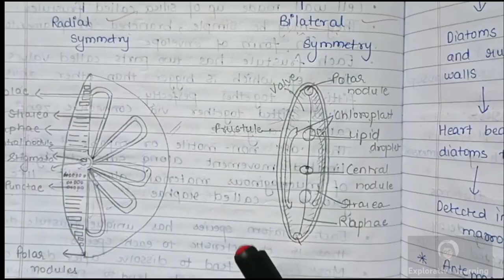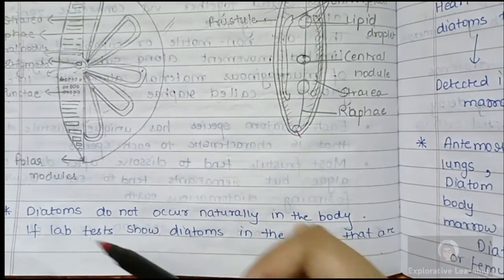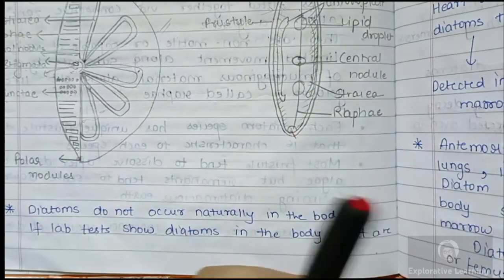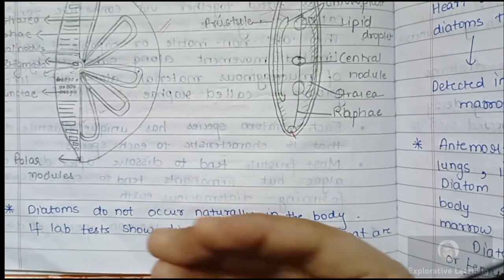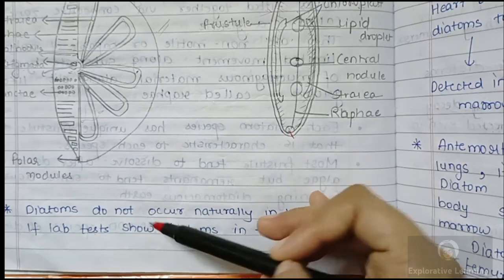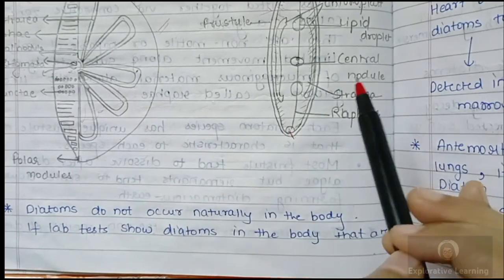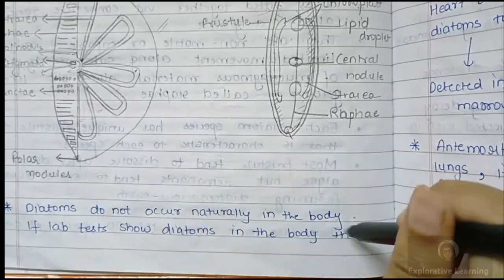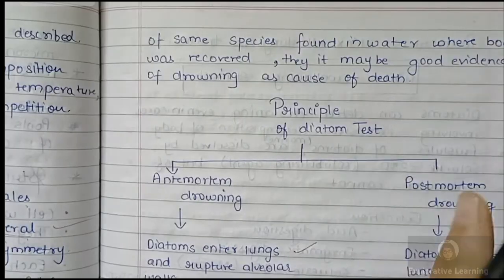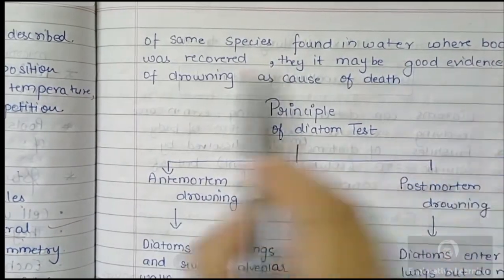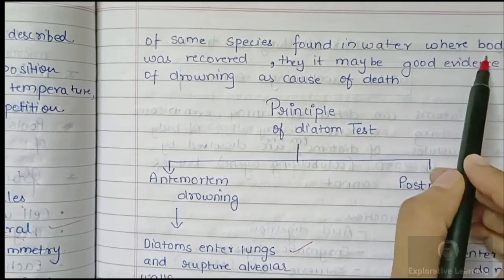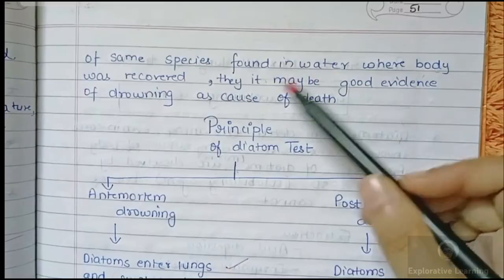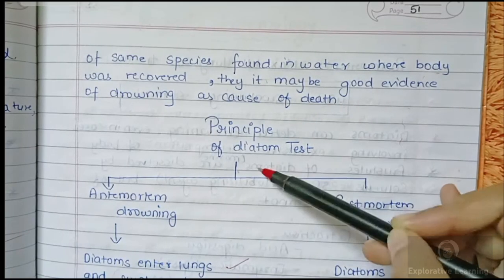Diatoms do not occur naturally in the body of a human being, because they are found in water bodies and soil. You cannot expect diatoms to be present inside the body of an animal with high body temperature and many active enzymes. If autopsy reveals diatoms in the body of the same species as found in the water where the body was recovered, there is a high chance this is a case of drowning.